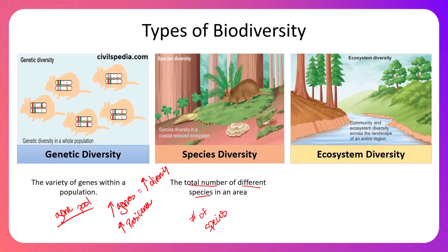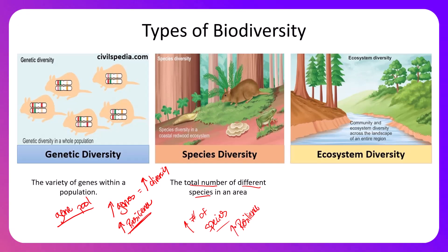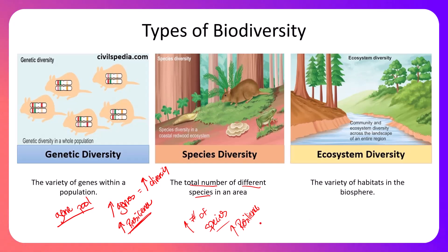There's also a term called evenness, which is a measure of the relative populations within a community — for example, looking at the number of lions, tigers, and bears in an ecosystem. Ecosystems with higher species diversity are more resilient because you have more organisms and different species to fill possible niches. If one species goes extinct, you have more options to fill that niche and maintain that role within the ecosystem.